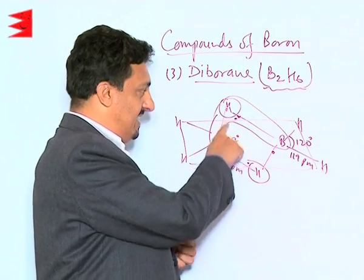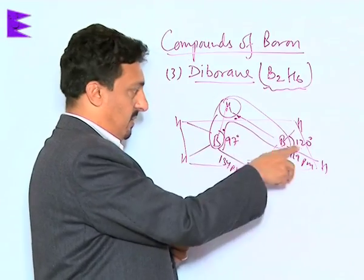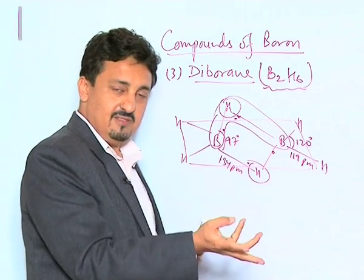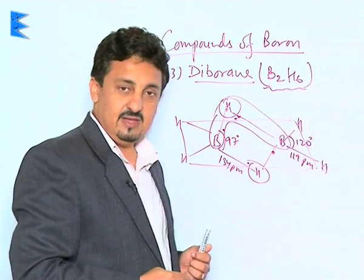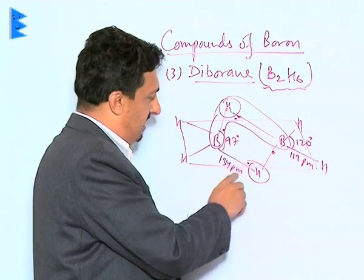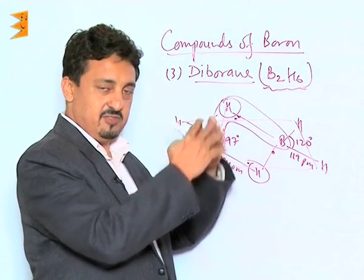The angles are 97° for these two hydrogens, whereas the angles of these two hydrogens are 120°. Bond lengths of these boron-hydrogens are also different. The ones lying on the same plane are at 119 picometers, and ones perpendicular are 134 picometers because they are more stretched due to bridge bonding.